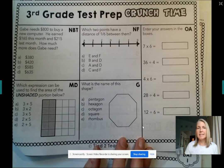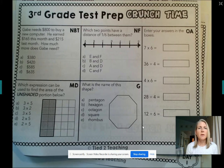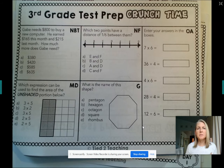All right, so we are looking at day three of Crunch Time. On the first problem, we have Gabe. He needs $800 to buy a new computer. He earned $165 this month and $215 last month. How much more does Gabe need?